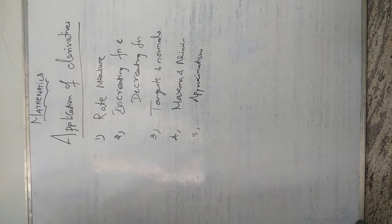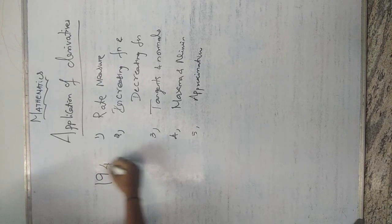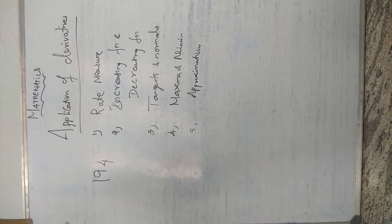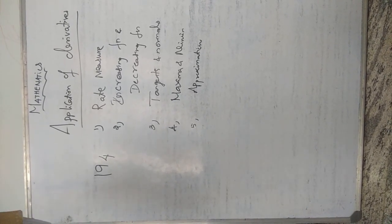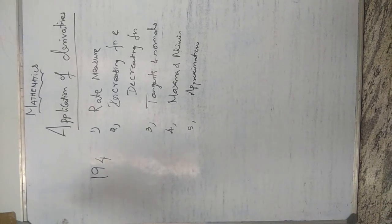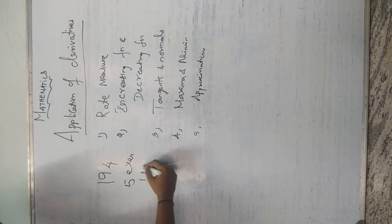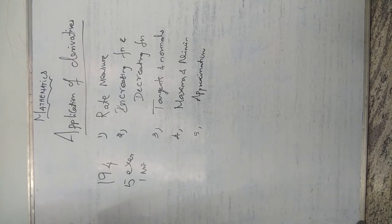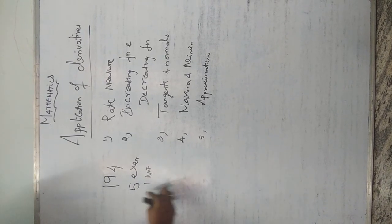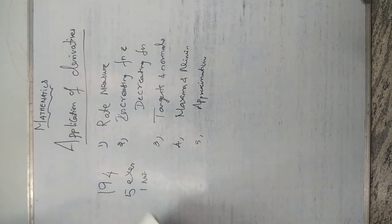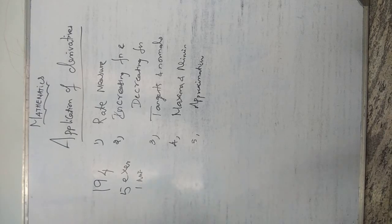I will tell you the exercise numbers — page 194 in the textbook, Volume 1. The exercises are 6.1, 6.2, 6.3, 6.4, 6.5, and miscellaneous. So there are five exercises and one miscellaneous. You have to concentrate more on all five exercises and the miscellaneous section. Page 194 starts.